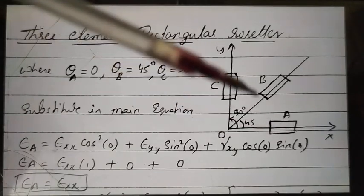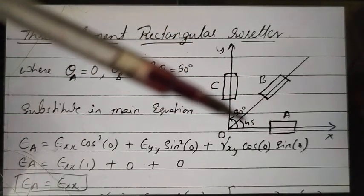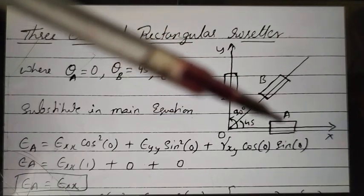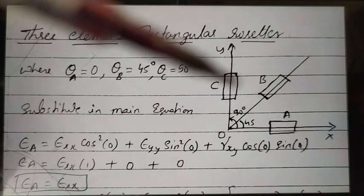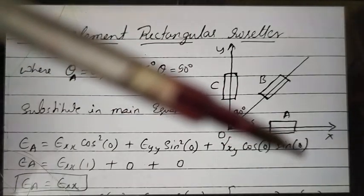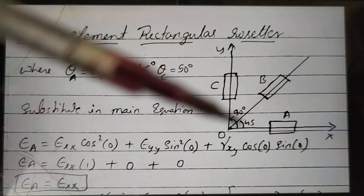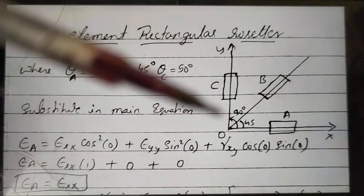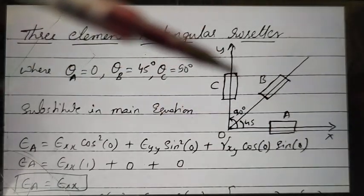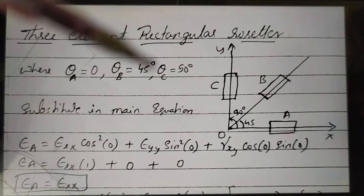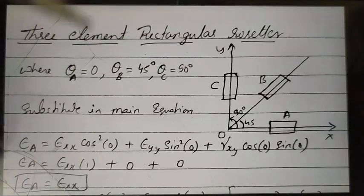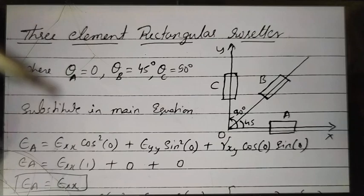Now we move to the three-element rectangular rosette, consisting of three gauges a, b, and c. Here, gauge a is along the x-axis (theta_a equals zero), gauge b makes a 45-degree inclination (theta_b equals 45 degrees), and gauge c makes a 90-degree inclination (theta_c equals 90 degrees). This arrangement is used when you don't know epsilon_xx, epsilon_yy, and gamma_xy.